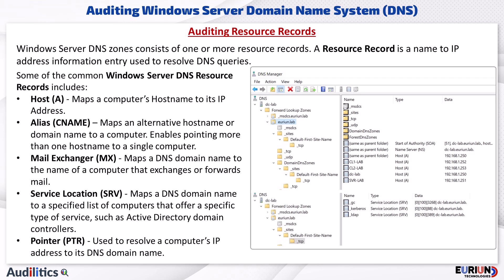The mail exchanger or MX record maps a DNS domain name to the name of a computer that exchanges or forwards mail — for example, a computer with Exchange Server or hMail Server installed. The service location or SRV record maps a DNS domain name to a specified list of computers that offer a specific type of service, such as Active Directory domain controllers. Other common service location records include LDAP and Kerberos.